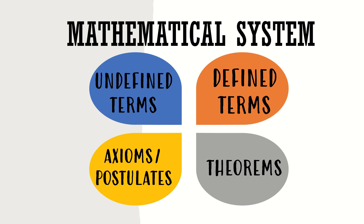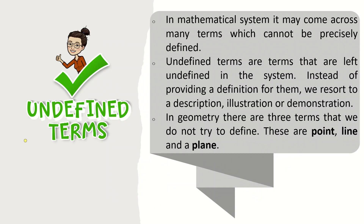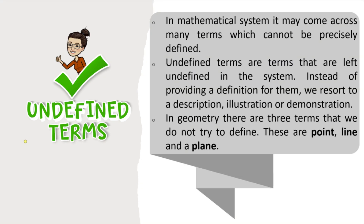Let us first unlock the undefined terms. In a mathematical system, we may come across many terms which cannot be precisely defined. Undefined terms are terms that are left undefined in the system. Instead of providing a definition for them, we resort to a description, illustration, or demonstration. In geometry, there are three terms that we do not try to define. These are point, line, and the plane.